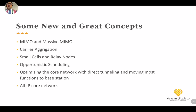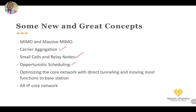Some new and great concepts applied in 4G include: MIMO and massive MIMO — using hundreds of antennas, especially at millimeter waves where the wavelength is very small, enabling two-dimensional or even three-dimensional antenna arrays. Carrier aggregation, small cells, relay nodes, and opportunistic scheduling — the latter started with high-speed packet access in 3G but was more fully utilized in 4G. Core network optimization through direct tunneling, moving most functions from the controller to the base station, and an all-IP core network.